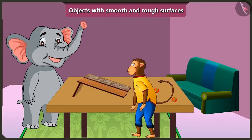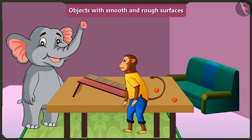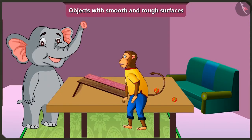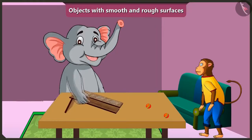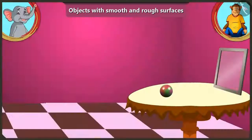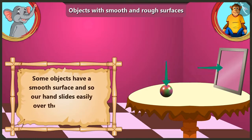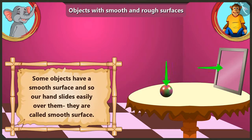Look here, just look at the surface of this slope. Our hands slide smoothly and easily on things which have a smooth surface. We also call them smooth surfaced. My hand is sliding on this — its surface is very smooth. Yes Appu, the surface of few things are smooth, so our hand easily slides on them. This is called a smooth surface.